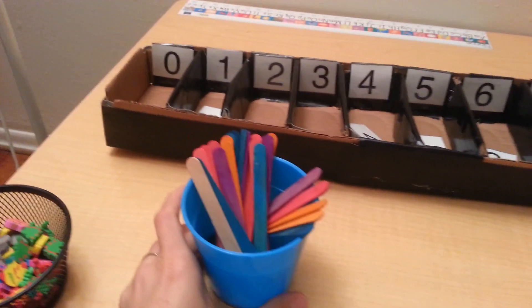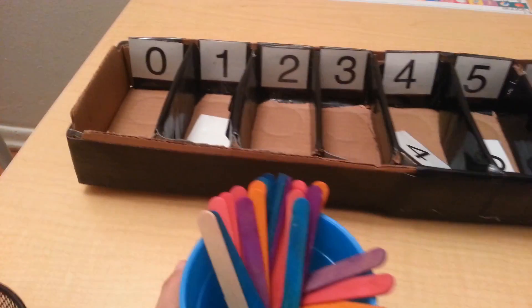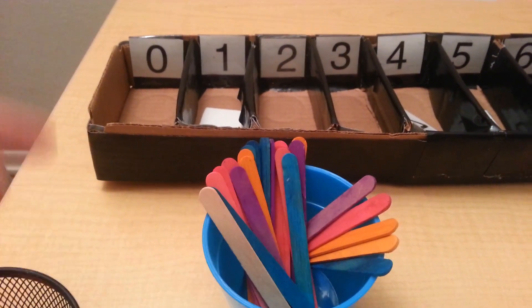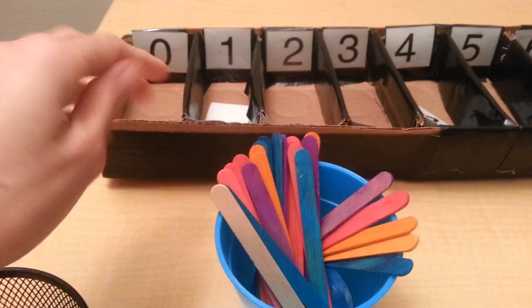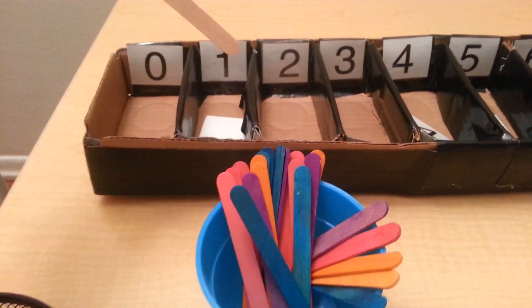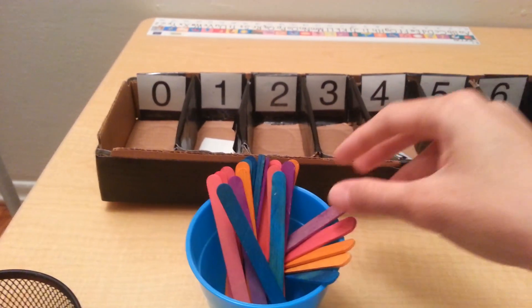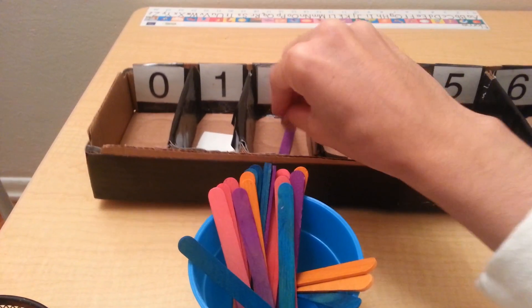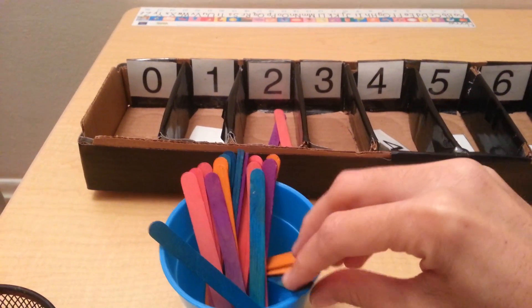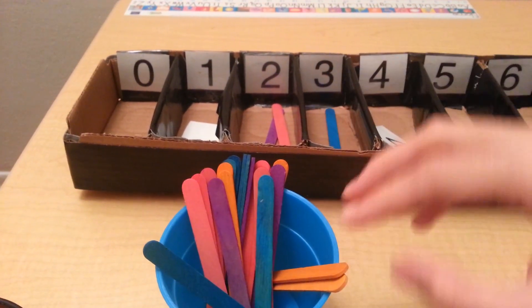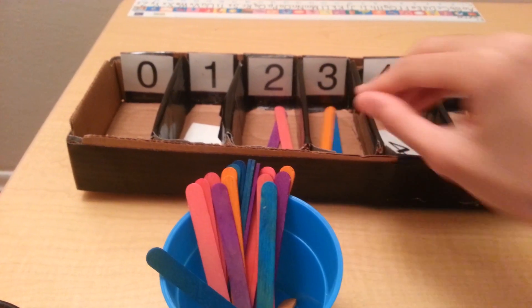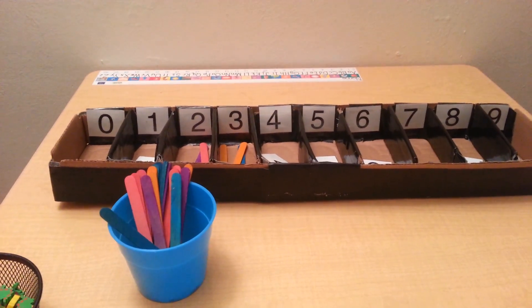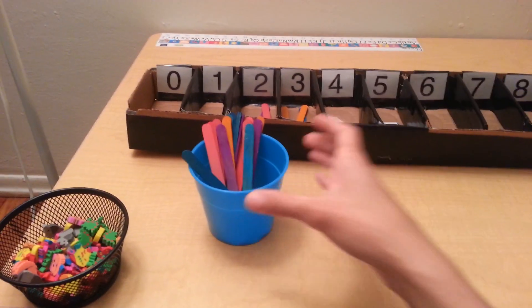So the same concept here. You start off, the child will start off here with a zero. How many popsicle sticks do we put here? None. Here we put one, two, one, two, three, and so on. And you can do the same thing with the erasers there.